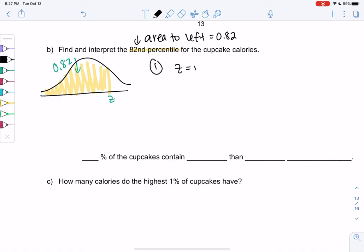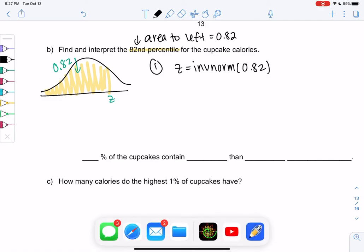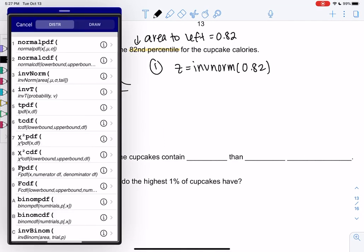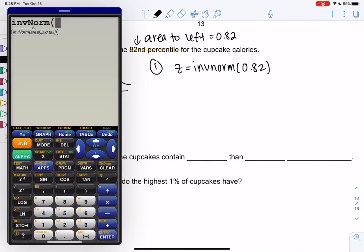We'll use inverse norm to find z-score. That's when we go backwards. We'll do inverse norm of 0.82 because that's area to the left. Inverse norm of 0.82, and we get a z-score of 0.915.